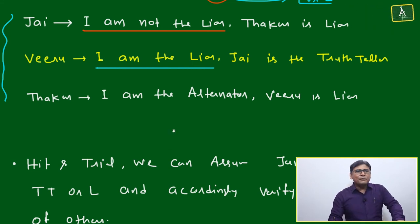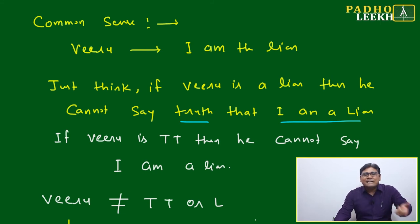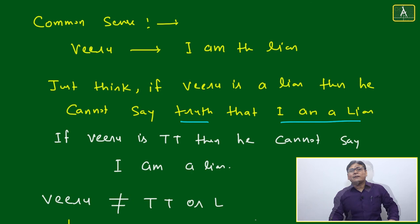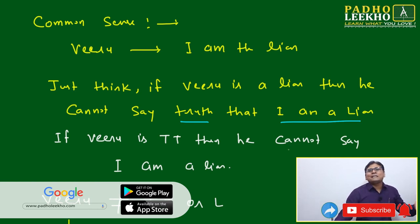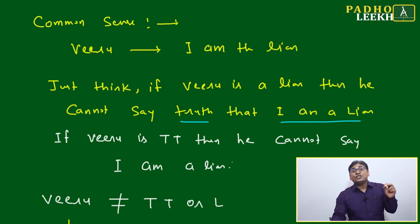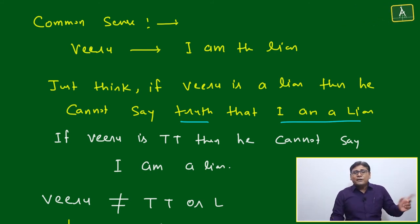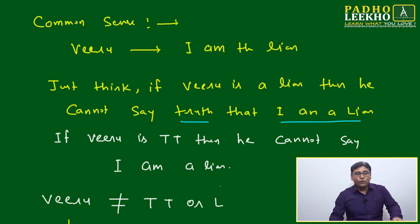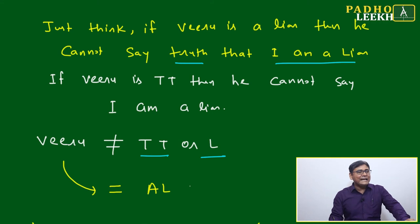Think about it from both sides. If Viru is a liar, he cannot say the truth — so 'I am a liar' would be a true statement, making him not a liar. If this statement is true, then Viru is a truth teller — but then how can he say 'I am a liar'? There is a conflict. Viru cannot be a truth teller, and Viru cannot be a liar. The only option is that Viru is an Alternator.